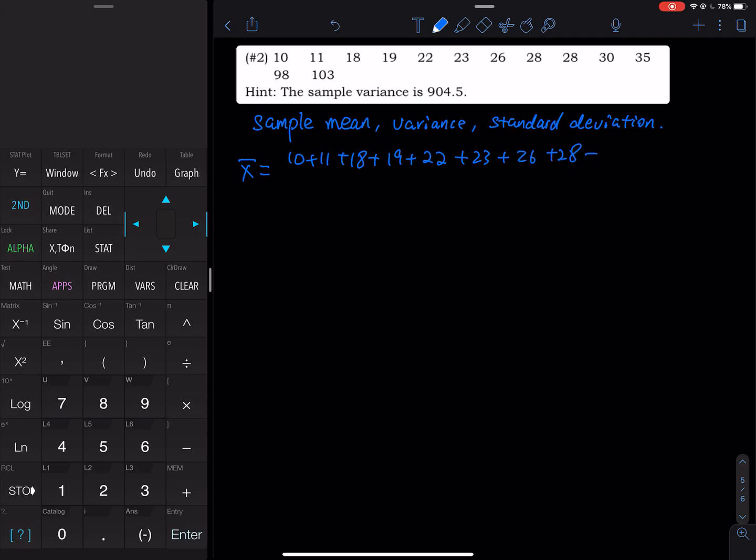And then 28, 28, 30, 35, 98, and then 103. So you add them up, you get a sum, and then you take the sum divided by 13 data entries. So x̄ is approximately equal to 34.5.